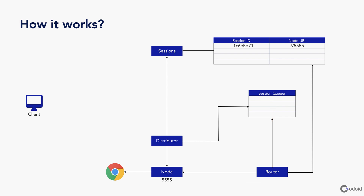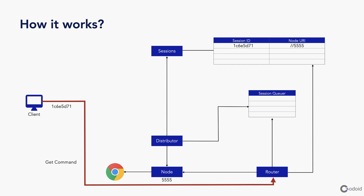Now the client is sending a command to be executed on the node. Every command goes to the router. The router decides whether it is a session creation request or a normal command. If it is a session creation request, it goes to the session queueer. If it is a command, it queries the session ID to pick up the node URI. As soon as the router gets the node URI from the session map, it sends the command directly to the node and performs the execution. This is how Selenium Grid for distributed execution works.